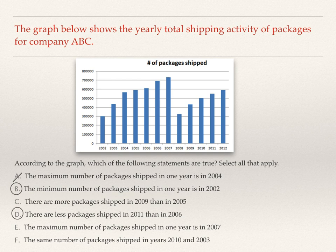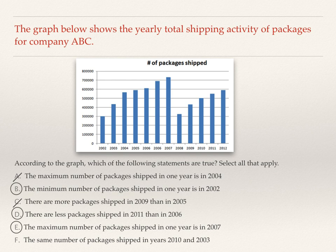Now let's look at C — there are more packages shipped in 2009 than 2005. That is false. Choice E — the maximum number of packages shipped is in the year 2007. Yes, we know that is true. And the last one — the same number of packages were shipped in 2010 and 2003. That is false, so we can eliminate it. We're taking each option one at a time, comparing it against the graph, and either choosing or eliminating it.